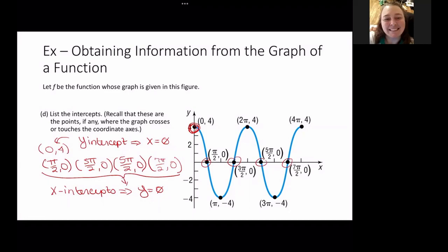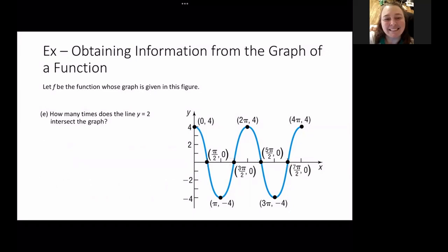We can also find that off of the graph itself. We only have a couple more things that we want to look at. How many times does the line y equals 2 intersect this graph? So y equals 2 is going to be a horizontal line through the graph.